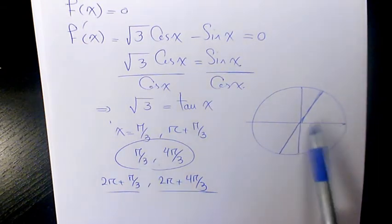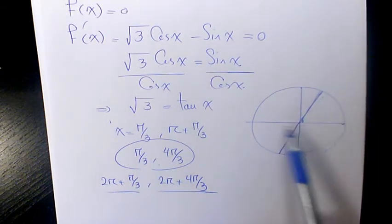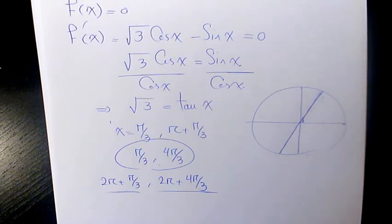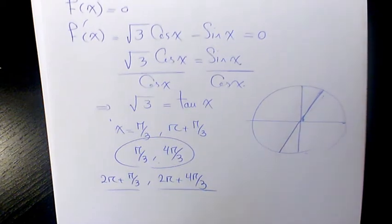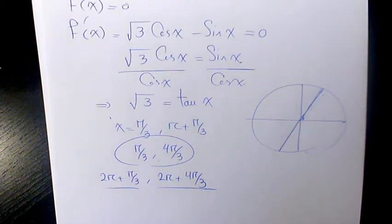The first solutions are π/3 and 4π/3. These are the points where f'(x) = 0. I hope you enjoyed this video. Please leave me a comment if you have any questions.